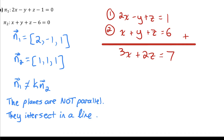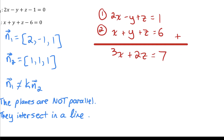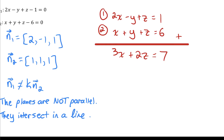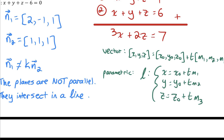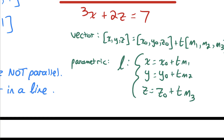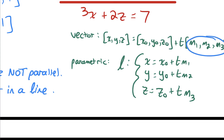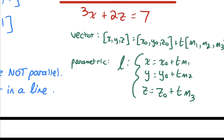Now we need to write the equation of the line in 3-space using vector or parametric equations — not scalar, since that's used for planes. The key parts are a position vector (x₀, y₀, z₀) pointing to a point on the line, and a direction vector (m₁, m₂, m₃) showing the direction of the line. Step two says: choose one of the remaining variables to be the parameter t. We have x and z left, so let z equal t.